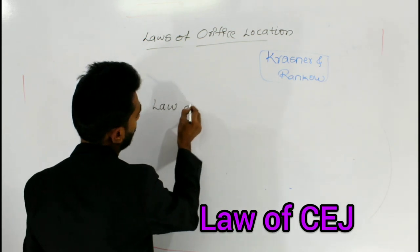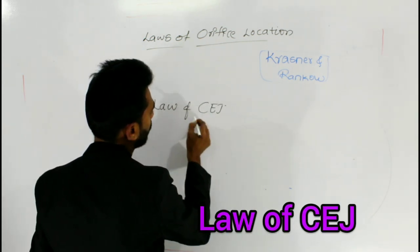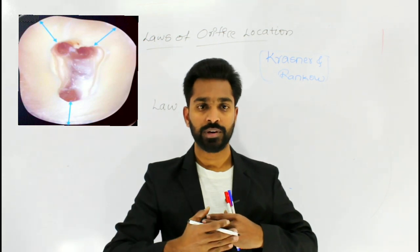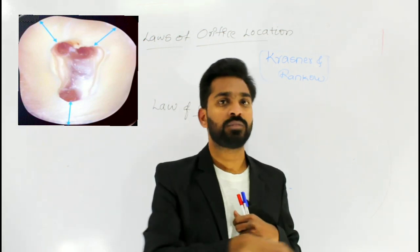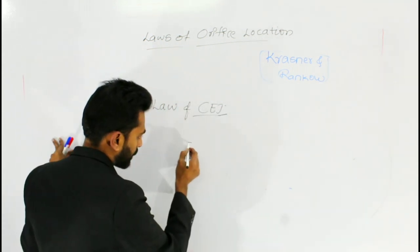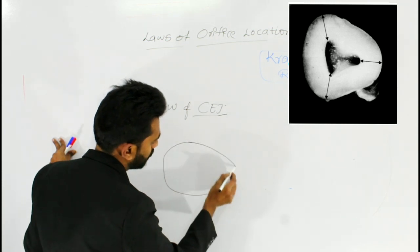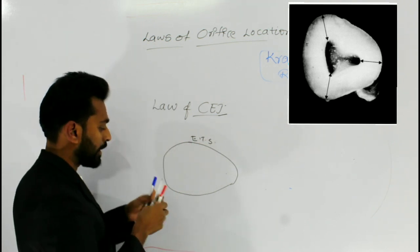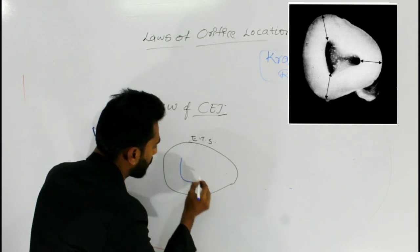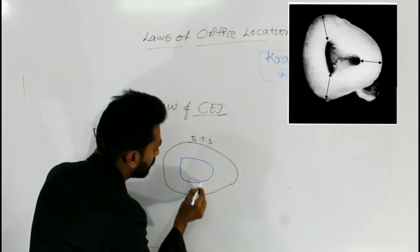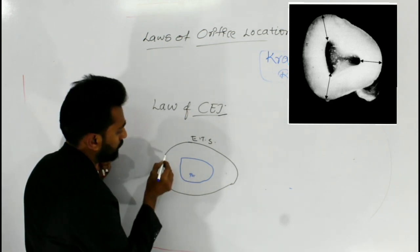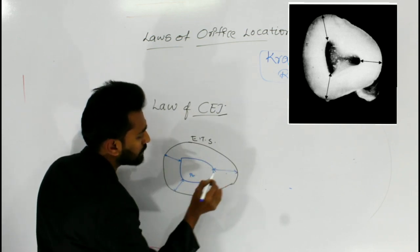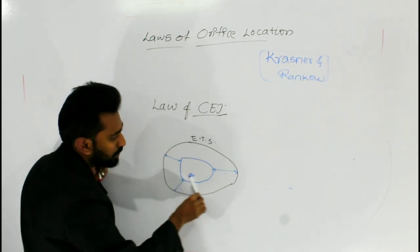The law of CEJ states that at the level of the CEJ, the distance between the external tooth surface and the wall of the pulp chamber is the same throughout the circumference of the tooth. The distance between the external tooth surface and the pulp chamber wall is always uniform all around.